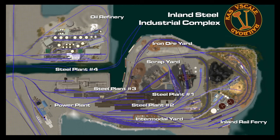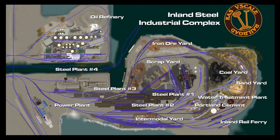Above the inland rail ferry is Portland cement. Right adjacent to that is the water treatment plant, and right adjacent to that is the sand yard. Right above that is the coal yard. And to the left of that in the center of the peninsula is the blast furnace, which produces all the molten materials that get made into steel. And lastly is the slag yard, where byproducts from the blast furnace get shipped to.